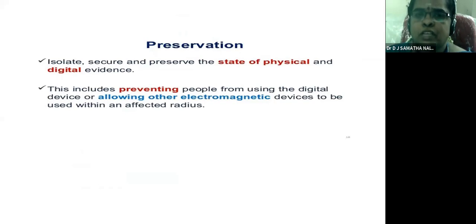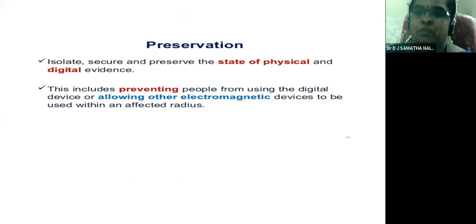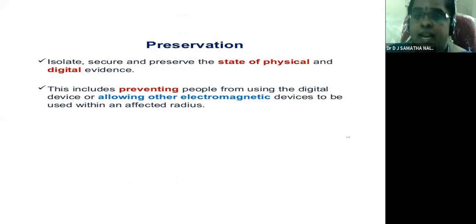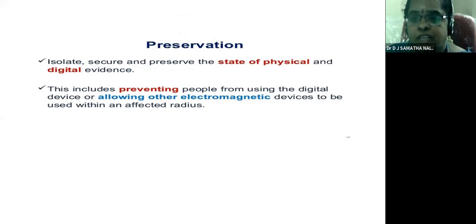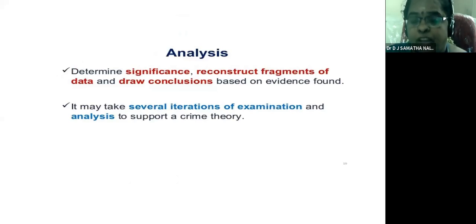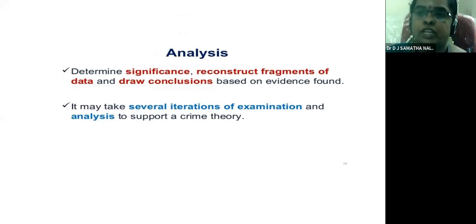What is preservation? The state of physical and digital evidence must be isolated, secured, and preserved. This includes preventing other people and electronic/magnetic devices from being used within the affected area. The next step is analysis — we must determine the significance of cases and reconstruct the incident.